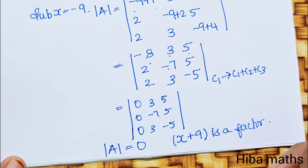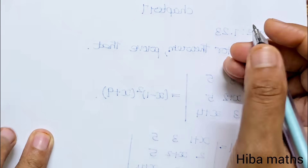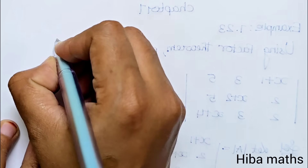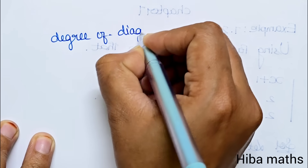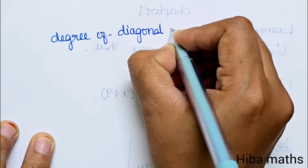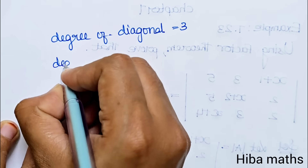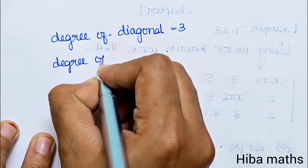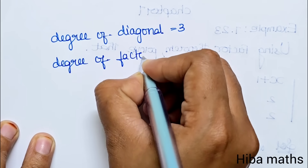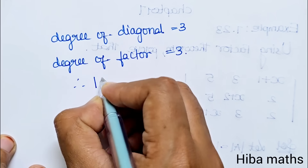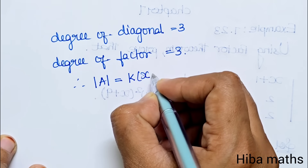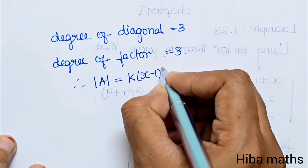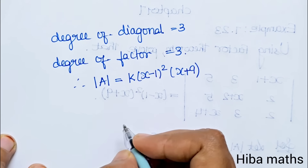Since k and x are constants, and the degree of the diagonal equals the degree of the factors, we can write: modulus of A = k into (x-1)² into (x+9).